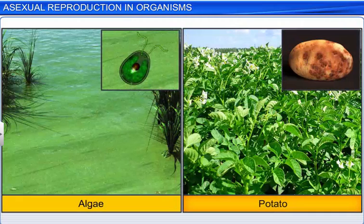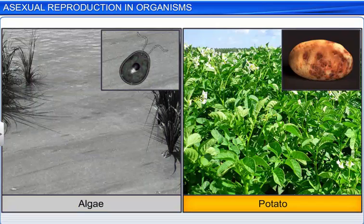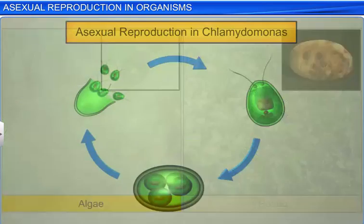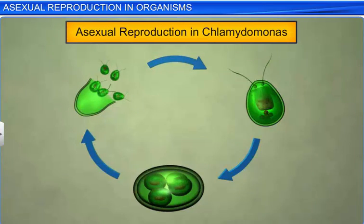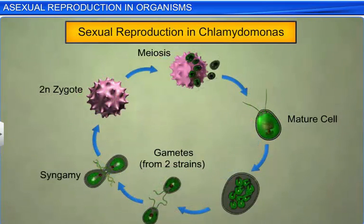Apart from single-celled organisms and animals, asexual reproduction is also seen in simple plants such as algae, as well as in certain higher plants such as potato. For instance, Chlamydomonas, a type of algae, develops zoospores which later mature into new plants. However, during unfavorable conditions, Chlamydomonas as well as other types of fungi and algae undergo sexual reproduction.